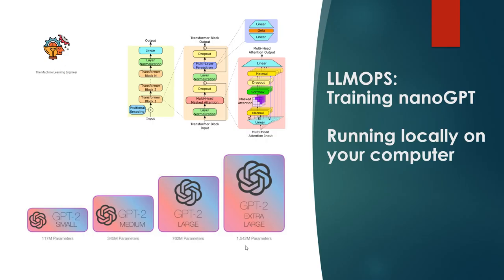They trained the model with the technology available at that time, which was not much in comparison with what we have today — cloud providers or specialized providers for accelerated computing. Even NVIDIA didn't have what you know today. It was really a feat. I will show you how long it would take and how much it could cost to replicate what OpenAI did, roughly six years ago — November 2019 was when they released the paper and model to the public.